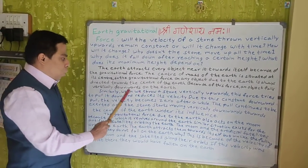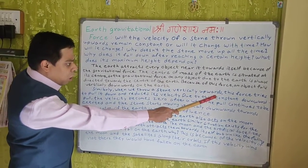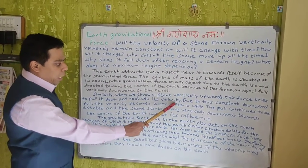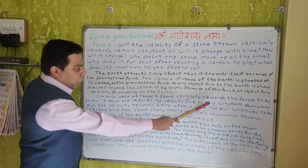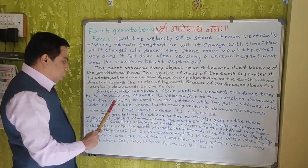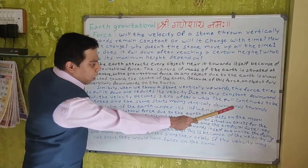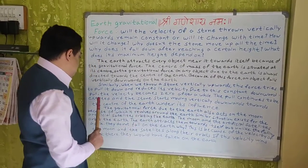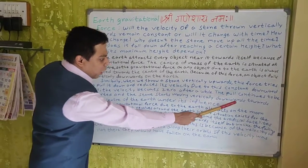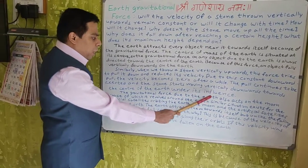Similarly, when we throw a stone vertically upwards, this force tries to pull it down and reduce its velocity. Due to this constant downward pull, the velocity becomes zero after a while. The pull continues to be exerted and the stone starts moving vertically downwards towards the center of the Earth under its influence.